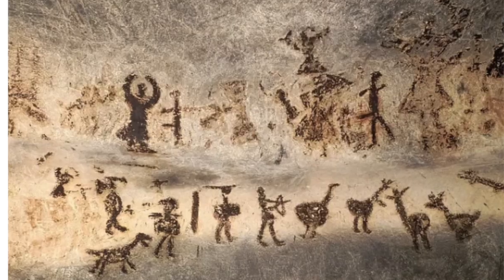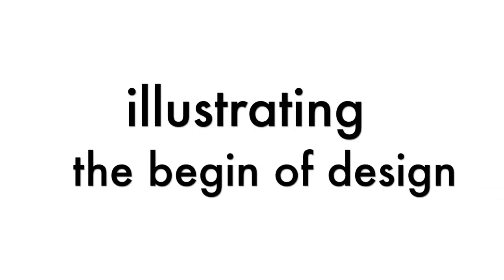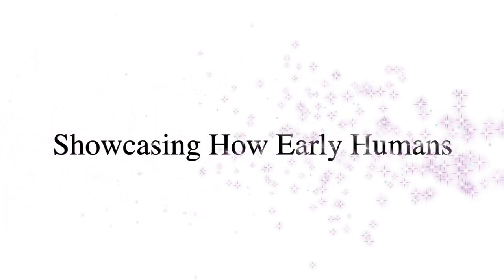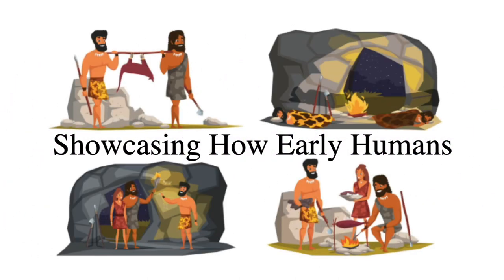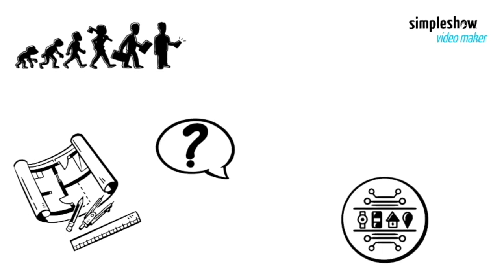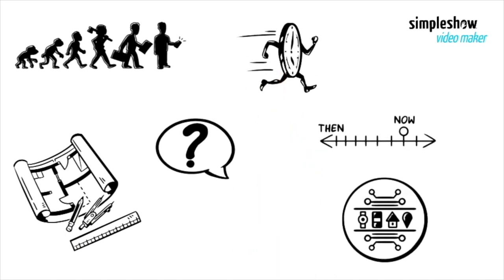The early technologies of fire, wheels, homes and art illustrate the beginning of human design, showcasing how early humans used design to adapt and improve their lives. Design history covers the evolution of how things are made and look over time.